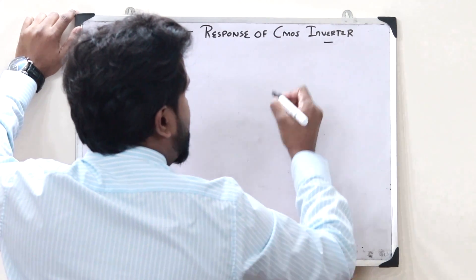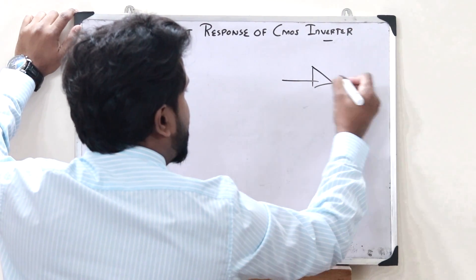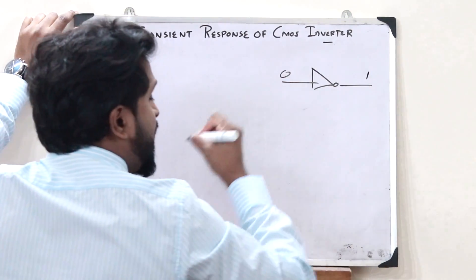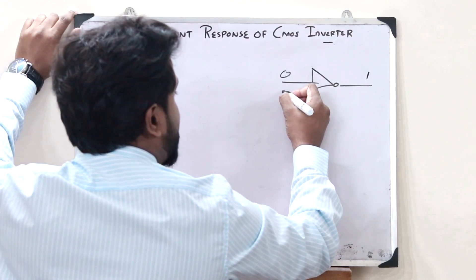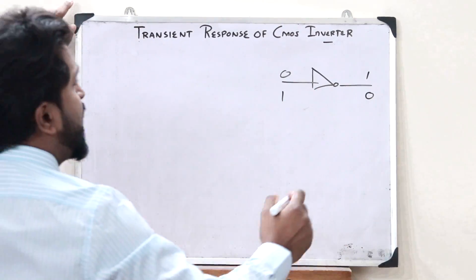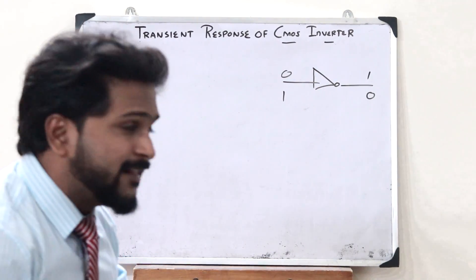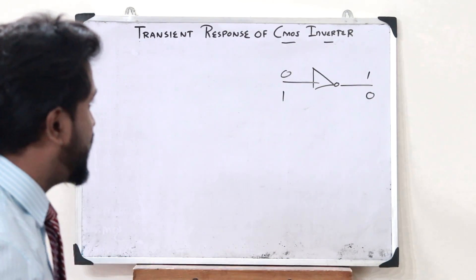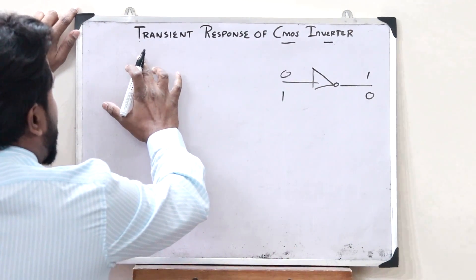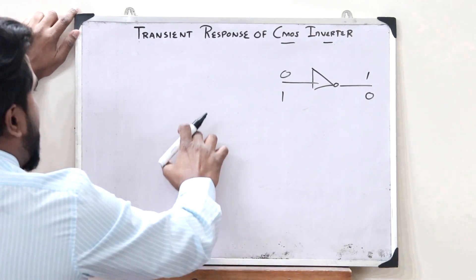An inverter is a device in which whatever input we give, we have to get the inverted output. That is, if we are giving 0 as the input, we have to get 1 as the output. Or if we are giving 1 as the input, we have to get 0 as the output. In the case of a CMOS circuit, it will have two components: a pull-up network and a pull-down network.